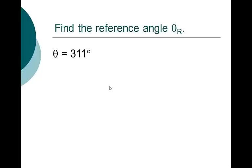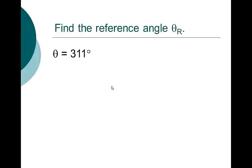Here's a quadrant 4 angle: 311 degrees. To find the reference angle: 360 minus 311, we get 49 degrees. If I know the sine, cosine, and tangent of 49 degrees, then I know the sine, cosine, and tangent of 311 degrees.